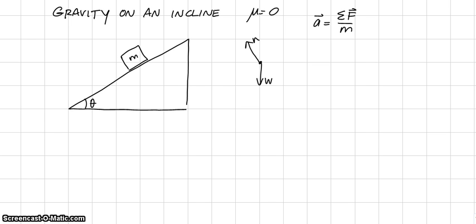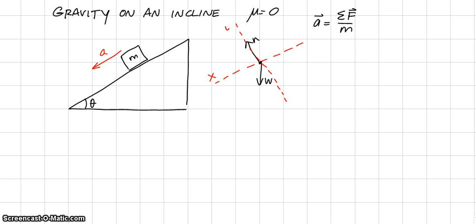Once we've drawn a free body diagram, we go ahead and choose a coordinate system. We know the object is going to move and accelerate down the incline, so we're going to choose a coordinate system where one axis is parallel to the incline and the other axis is perpendicular to the incline. The x-axis will be parallel, and the y-axis will be perpendicular.